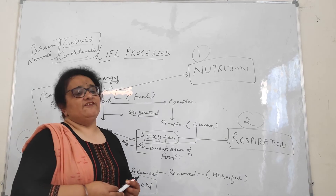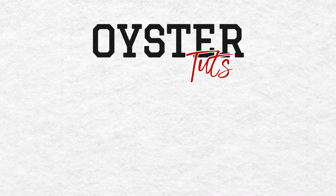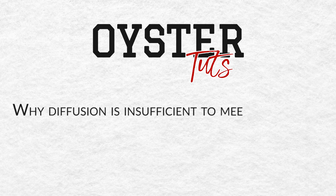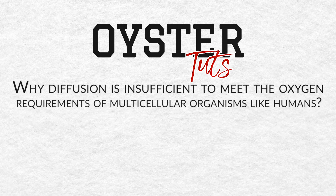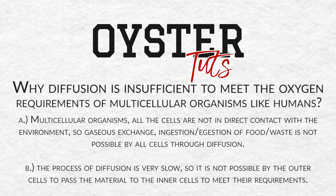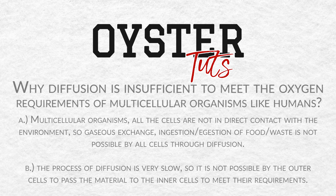This was an introductory lesson to life processes. Now we will discuss the NCERT questions for the topics we have covered. Question number one: why is diffusion insufficient to meet the oxygen requirement of multicellular organisms like humans? As we know, multicellular organisms are made up of many cells, and each cell is not in direct contact with the environment. So gaseous exchange or ingestion and ejection of food or waste is not possible for all cells. Moreover, the process of diffusion is very, very slow, so it is not possible for outer cells to pass material to inner cells to meet their requirements.